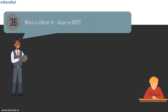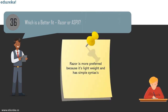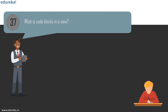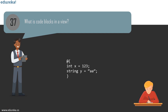The next question is: which is a better fit — Razor or ASPX? As per Microsoft, Razor is more preferred because it is lightweight and has simpler syntax. Regarding code blocks in MVC: unlike code expressions that are evaluated and sent to the response, code blocks are executed — useful for declaring variables for later use. A code block is written using the @ symbol followed by a curly brace, where you declare integer and string variables, then close the curly brace.